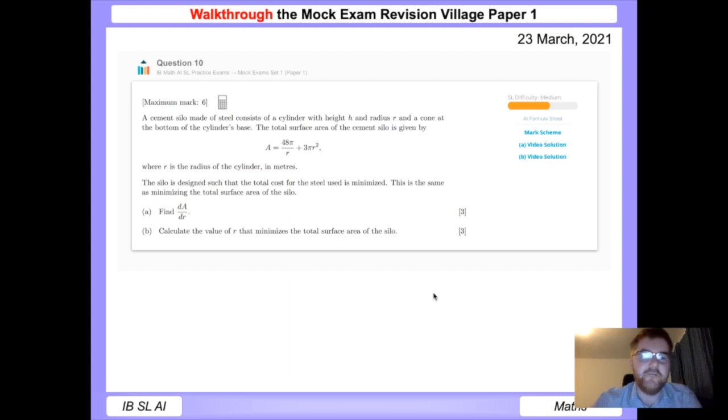So a cement silo made of steel consists of a cylinder with height h and radius r and a cone at the bottom of the cylinder's base. The total surface area of the cement silo is given by the following formula: A equals 48π over r plus 3πr squared, where r is the radius of the cylinder in meters. The silo is designed such that the total cost for the steel used is minimized. This is the same as minimizing the total surface area of the silo.